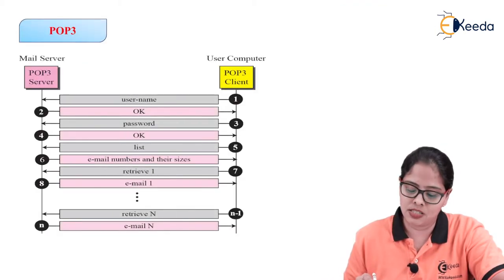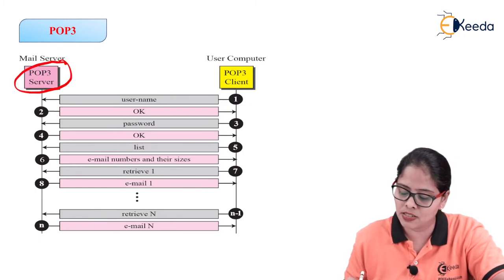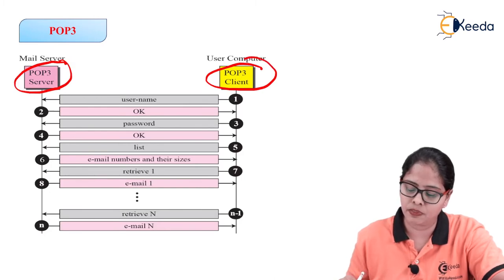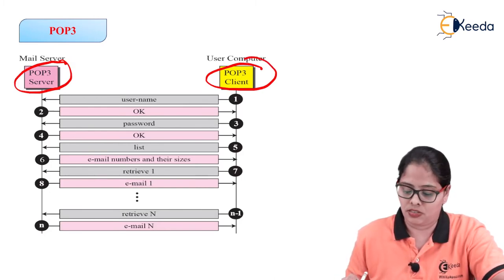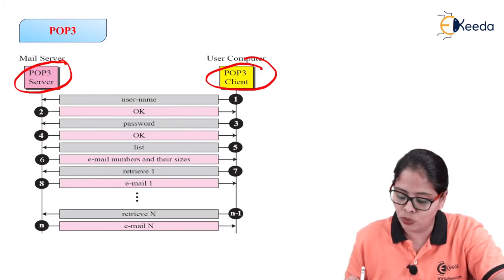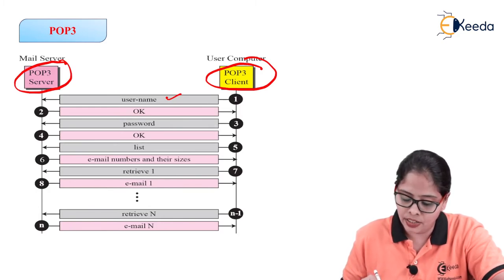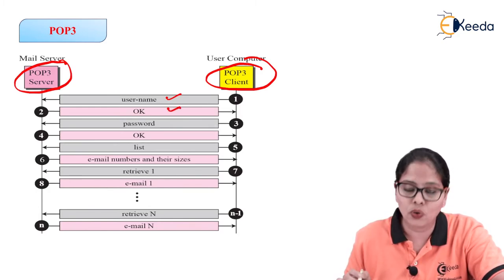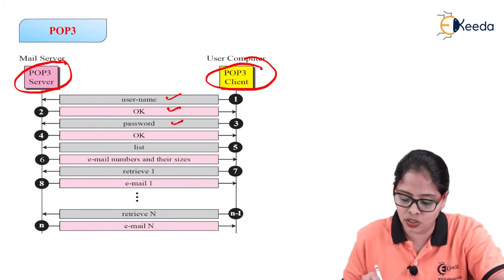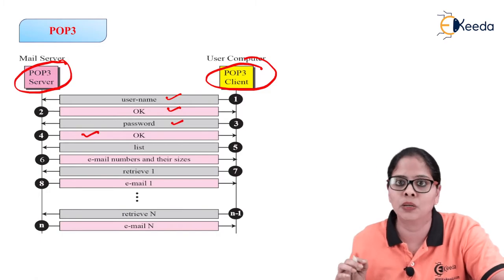Let us discuss POP3. This is the POP3 server and this is the POP3 client. The first step is login — you put your username, the server replies OK. Then you enter your password, the server replies OK. Then you are able to access your mailbox.